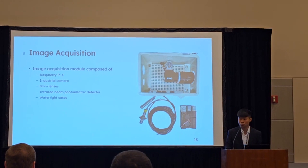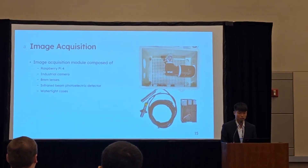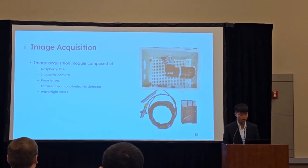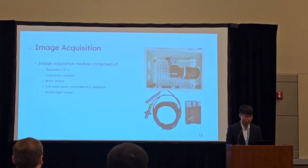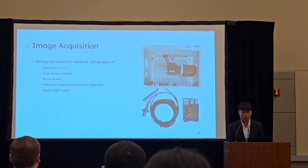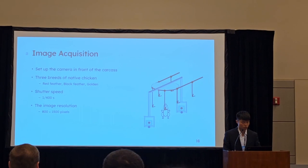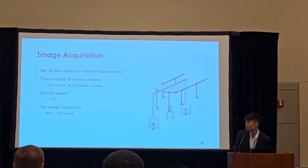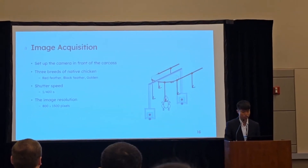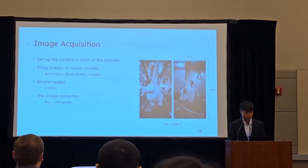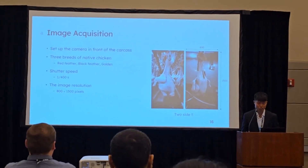The image acquisition module is composed of a Raspberry Pi board, an industrial camera, an 8mm lens, an infrared beam, a photoelectric detector, and a waterproof light case. The camera is set in front of the carcass as shown in the schematic diagram on the right side, then captures two-side images of the same carcass.